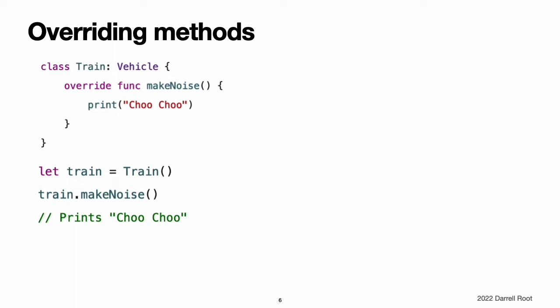Overriding Methods. You can override an inherited instance or type method to provide a tailored or alternative implementation of the method within your subclass. This example defines a new subclass of Vehicle called Train, which overrides the makeNoise method that Train inherits from Vehicle. If you create a new instance of Train and call its makeNoise method, you can see that the Train subclass version of the method is called.